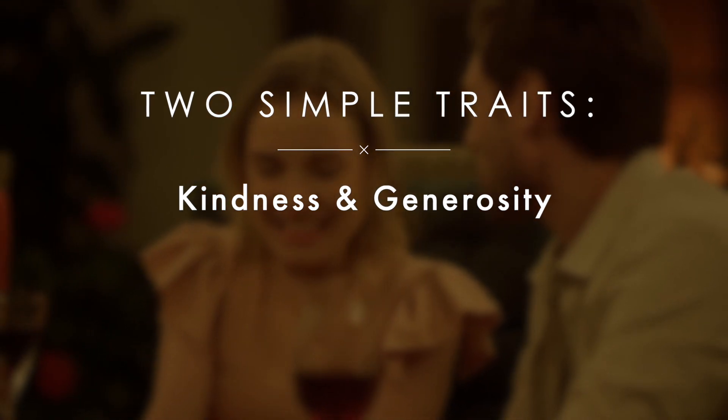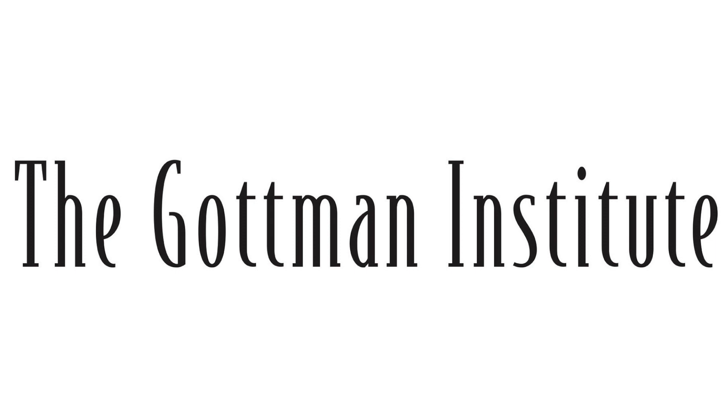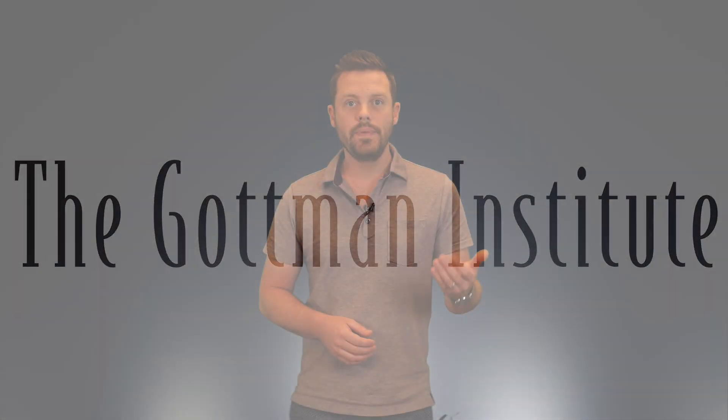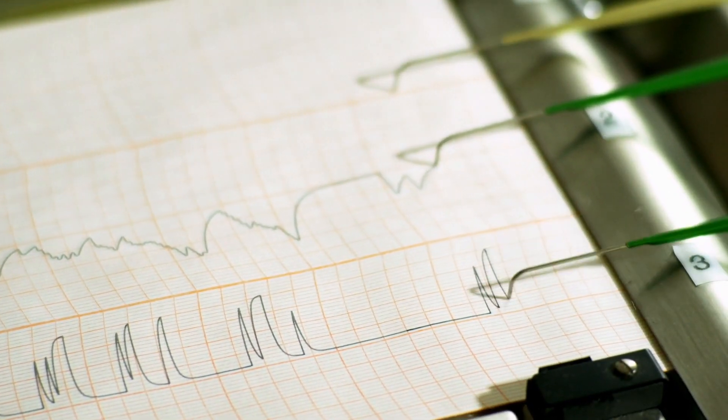Well, the Gottman Institute conducted a study involving hundreds of married couples. With the help of a team of researchers, they hooked up all their subjects to electrodes and began asking them a series of simple questions in front of their spouses. These were simple questions relating to how they met, what they did that week together, and what their social lives were like. As the subjects answered the questions, the researchers analyzed the couple's heart rate, blood flow, and sweat production. After collecting the data, they sent all the couples home and followed up with them six years later to see which couples had stayed together and which couples had separated or divorced.